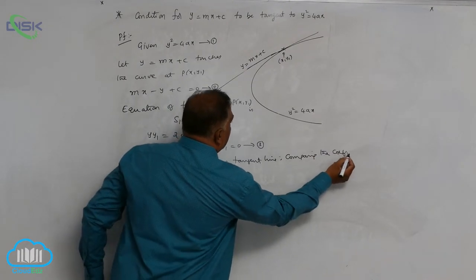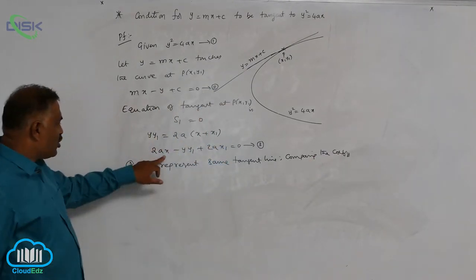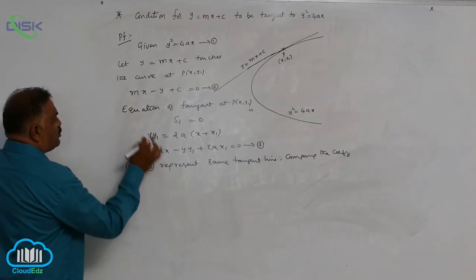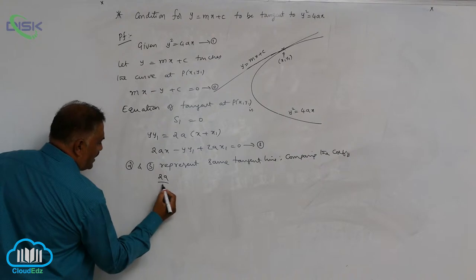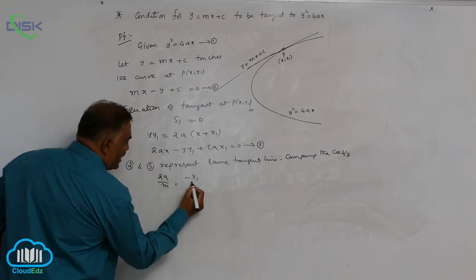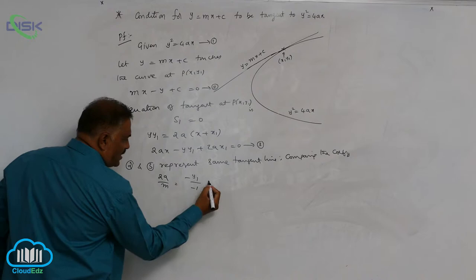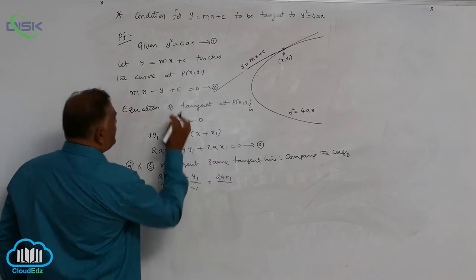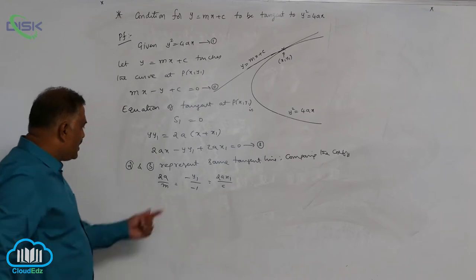The x coefficient is 2a in equation 3 and m in equation 2. So 2a/m = -y₁/(-1) = 2ax₁/c.